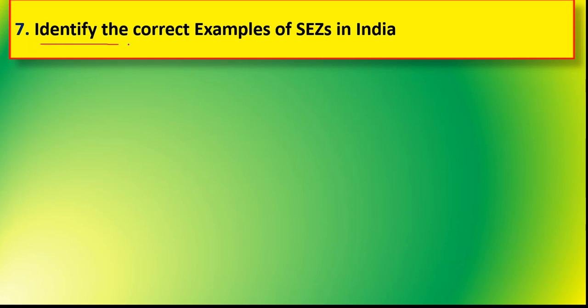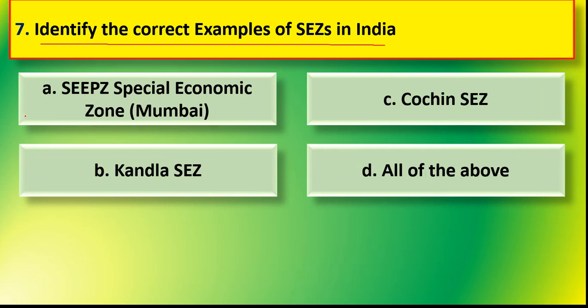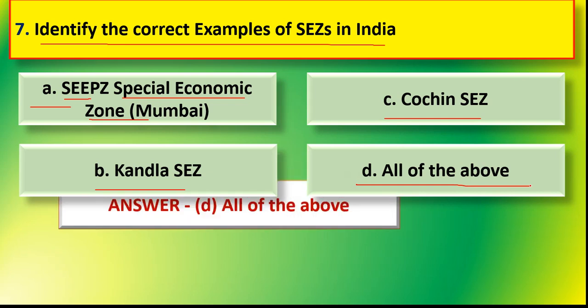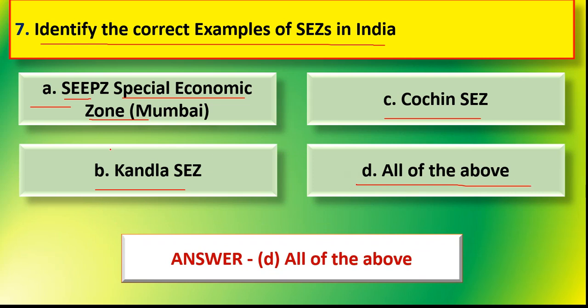Question number 7: identify the correct examples of special economic zones in India. Options are: option A SIP economic zone and special economic zone Mumbai, option B Kandla special economic zone and Kochi special economic zone, or option D all of the above. The correct answer is all of the above — all listed are examples of special economic zones in India.